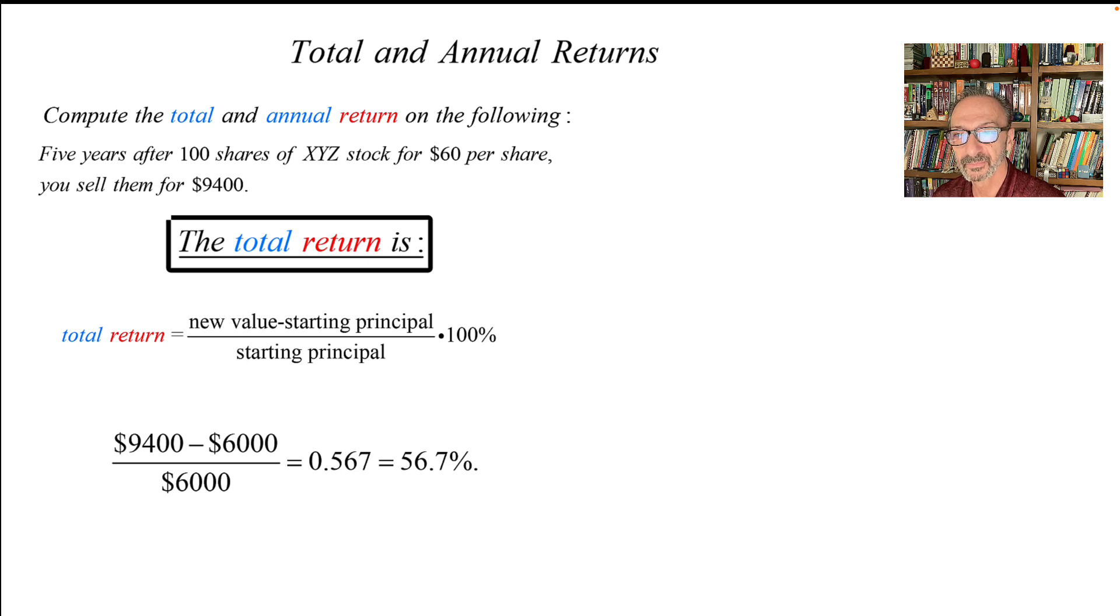We have $9,400, that's the new value, minus the principal, $6,000, divide by $6,000, and we get 0.567. And when you multiply by 100 percent or change it to percent, it's 56.7 percent.